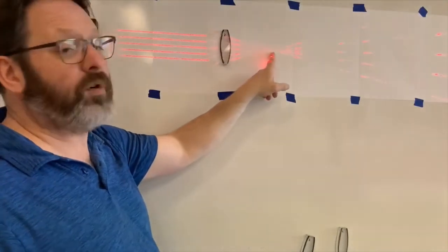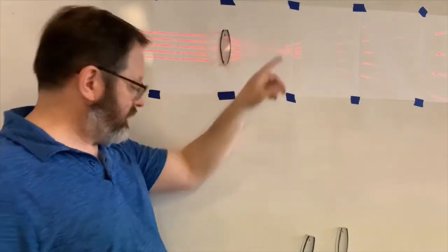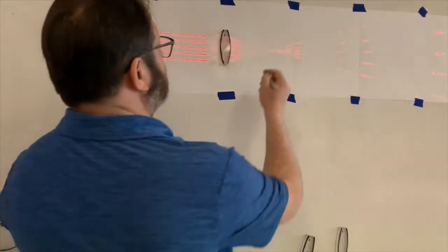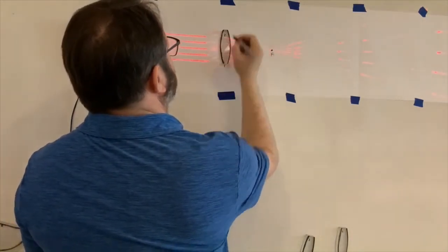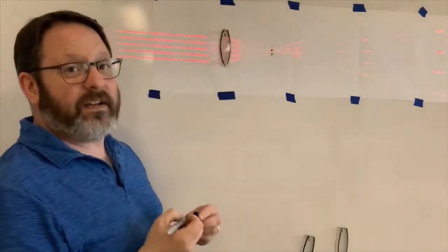So this is the focal point of this lens. So we can mark that spot F. So when the lens is here, the focal point F is here.